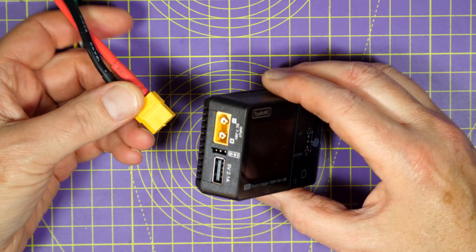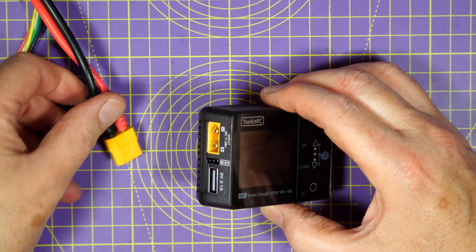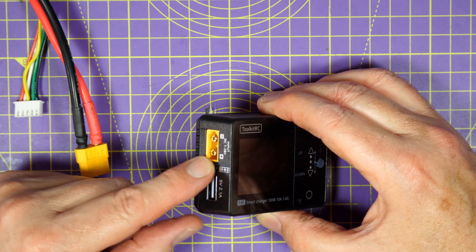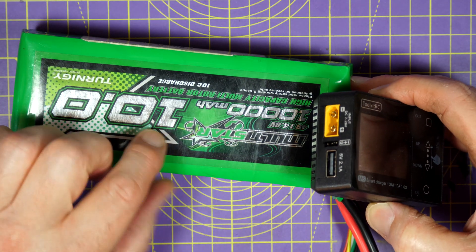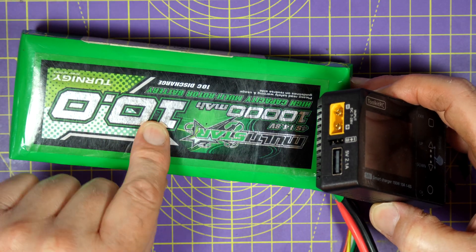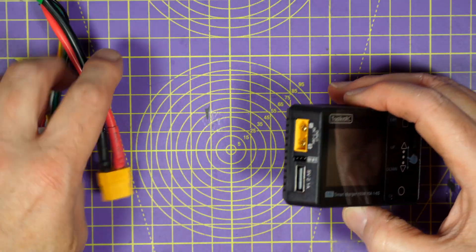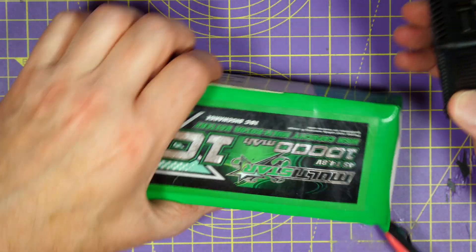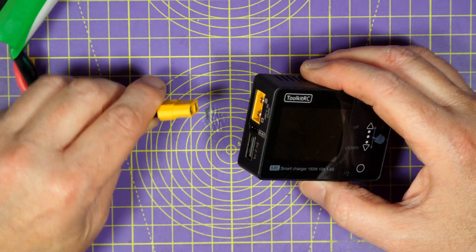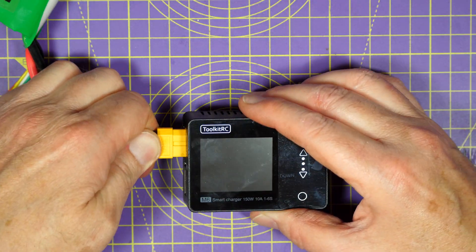Now, you power it on using an XT60 on this side, and you can use a power supply, or do what I do. I've got an old 10Ah battery, which I use in the field. Just throw it in your flight bag, and you get quite a lot of charges out of this. Just plug it in the side there.